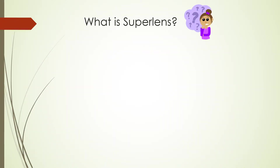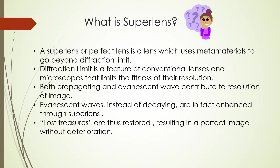Now let us see what is a superlens. A superlens, or perfect lens, is a lens which uses metamaterials to go beyond the diffraction limit. A superlens enhances the evanescent waves which carry image information of fine features of an object, and thus uses both propagating and evanescent waves to produce ultra sharp images without deterioration.